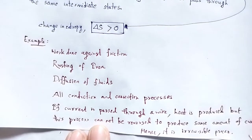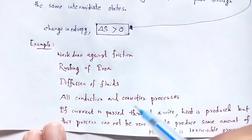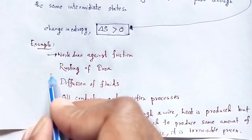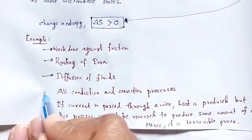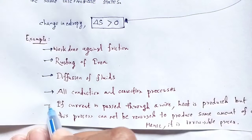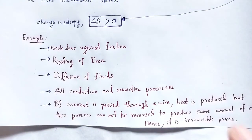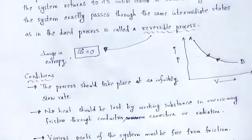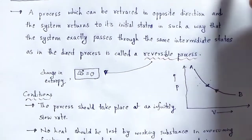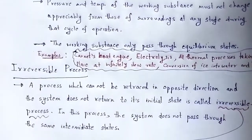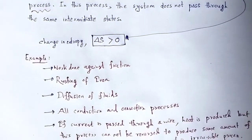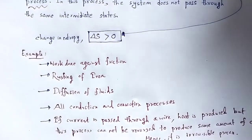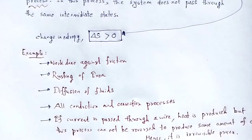To summarize, the examples of irreversible processes are: work done against friction, rusting of iron, diffusion of fluids, all conduction and convection processes, and passing current through a wire producing heat that cannot be reversed. With this video lecture we understand the basic concept of reversible and irreversible processes with examples in terms of entropy. Thank you.